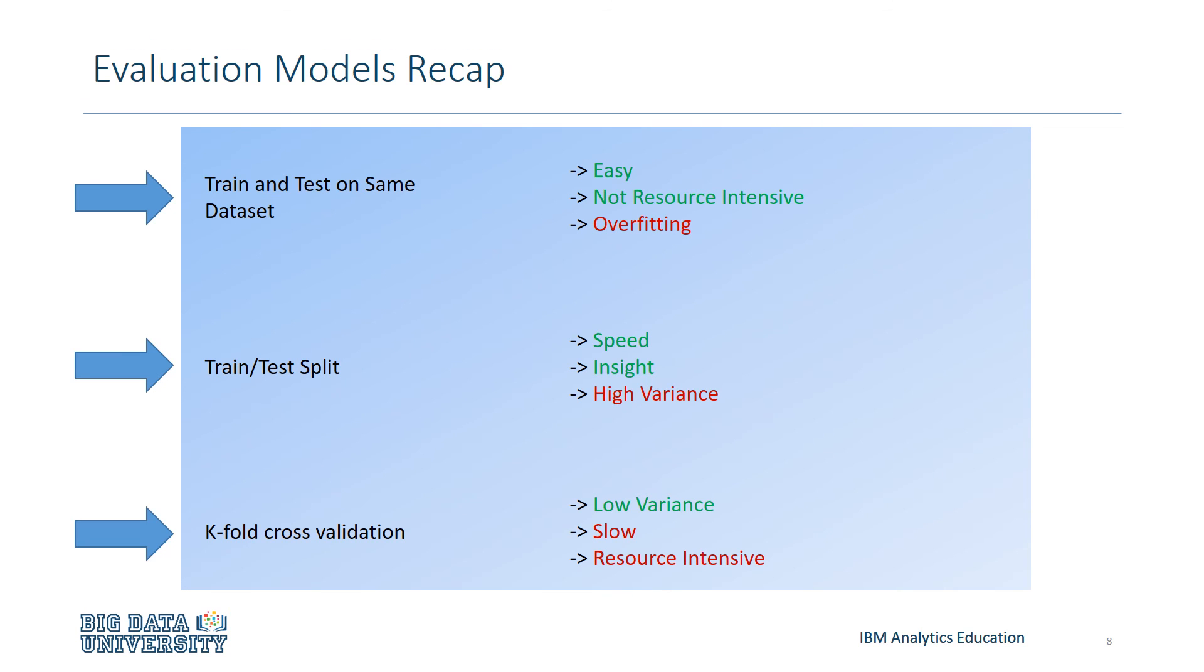K-fold cross-validation overcomes the high variance by taking multiple train test splits and averaging them out, however this is highly resource-intensive and lacks speed.